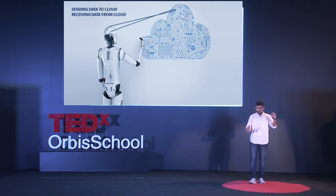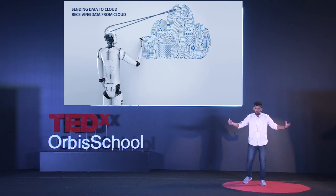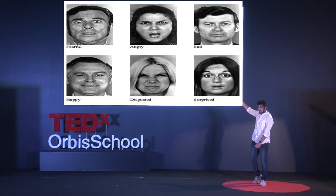One way to solve this problem is to embed cloud computing with these humanoid robots. Imagine a humanoid present in front of you, while its actual brain and intelligence is deployed in some other part of the world. All the humanoid has to do is gather information from the surrounding and send that data through internet connectivity to the cloud. The cloud processes all of that data and sends the output back to the humanoid, which then conveys that output as required.